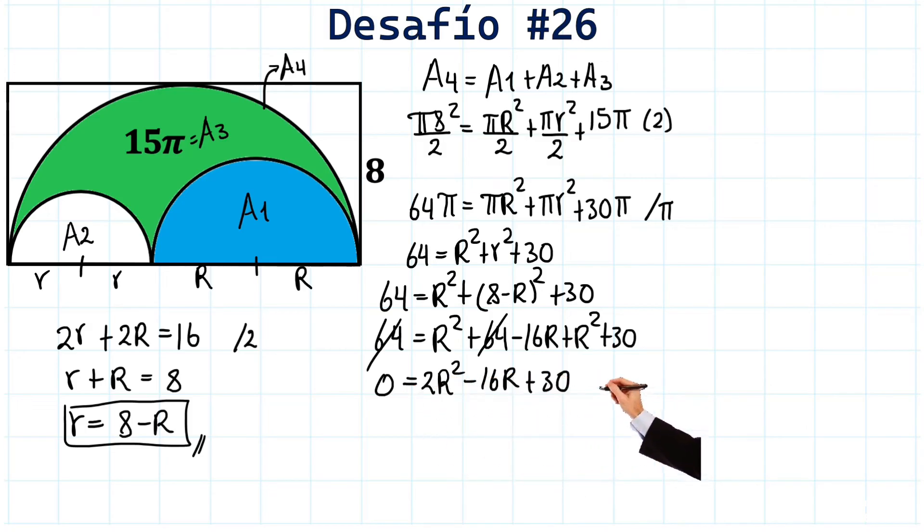All of this here, we can divide by 2. Let's do it. Divide by 2 again. Dividing this here by 2, we have 0 divided by 2, which gives us 0. 2 divided by 2, which leaves us with R squared. And 16 divided by 2 gives us 8R. And 30 divided by 2 is 15. Fantastic.